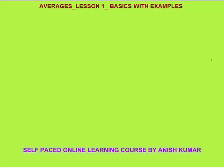Hello, this is Averages Lesson One. In this I will discuss basics with examples. This average chapter is one of the simplest chapters in quantitative aptitude. Let's start with a very simple example. Dhoni, a cricketer, scored 30, 40, 50, 60, and 70 runs in five innings, and he got out in all of the innings. Now what is the average score?